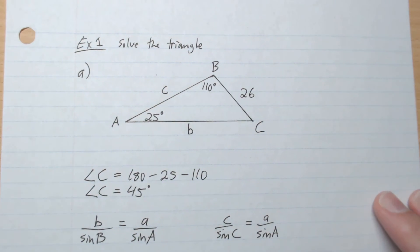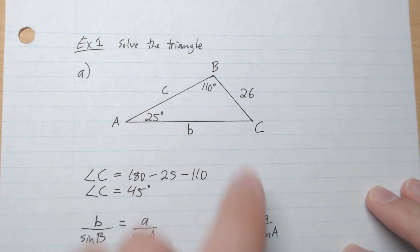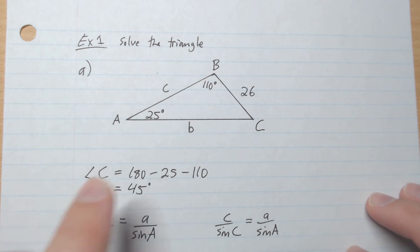So example 1: solve the triangle. What does that mean? That means find all of the angles and all of the sides in the triangle. So we have two angles here, so we can do 180 minus 25 minus 110, which gives 45 for angle C.